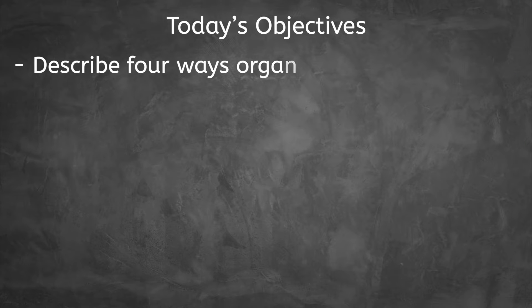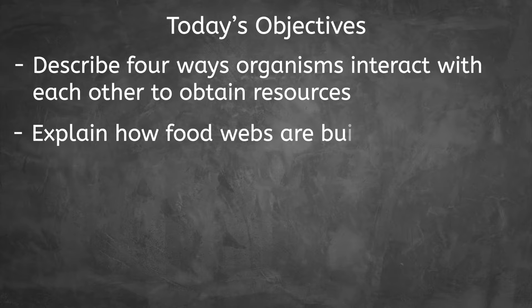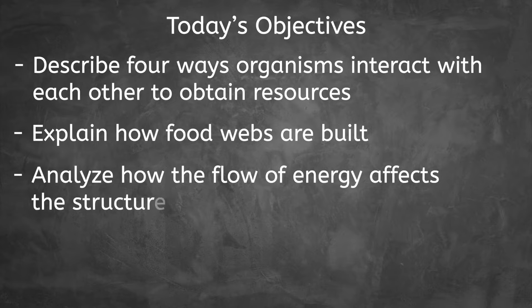Sometimes people happen to want the same thing at the same time. In nature, living organisms also want a lot of the same things, and there's not always enough to go around. In today's lesson, we'll be exploring this concept as we describe four ways organisms interact with each other to obtain resources, explain how food webs are built, and analyze how the flow of energy affects the structure of ecosystems. Let's get into it.